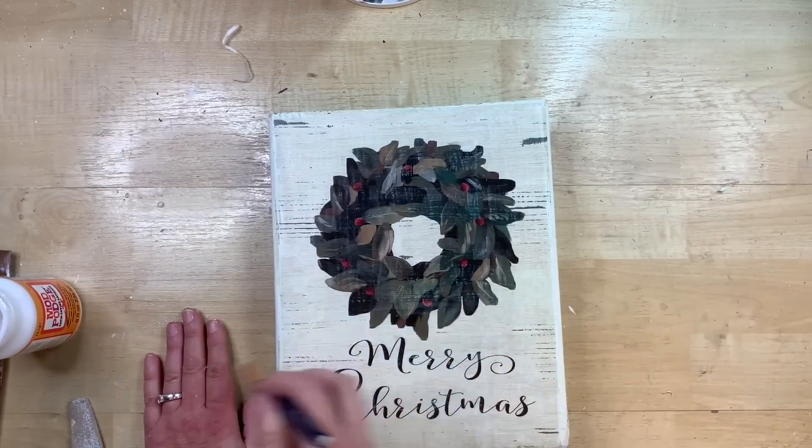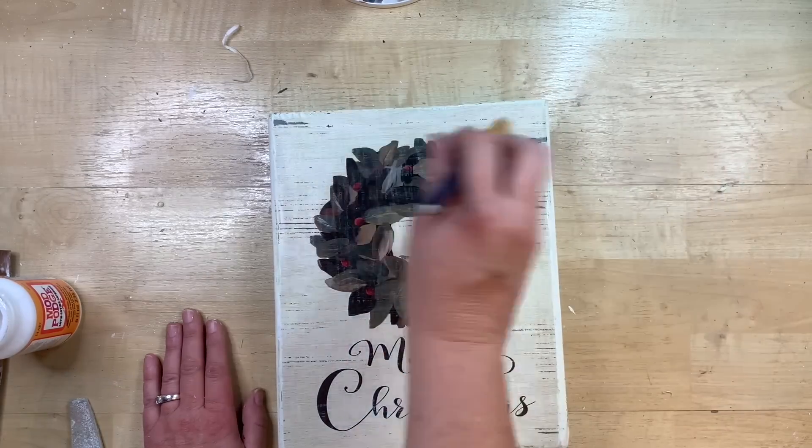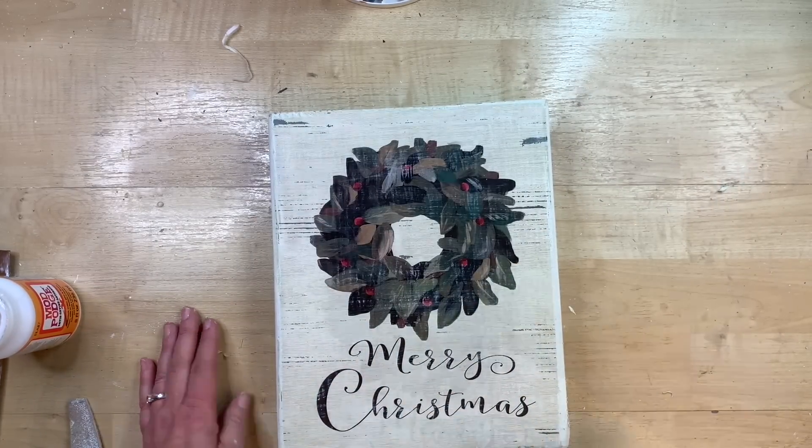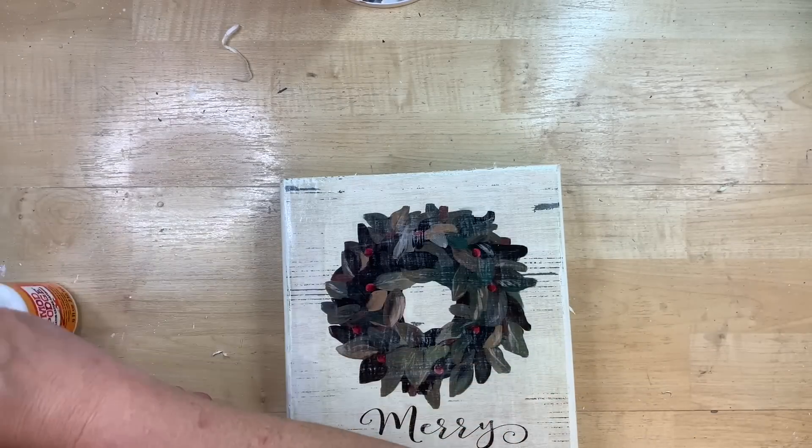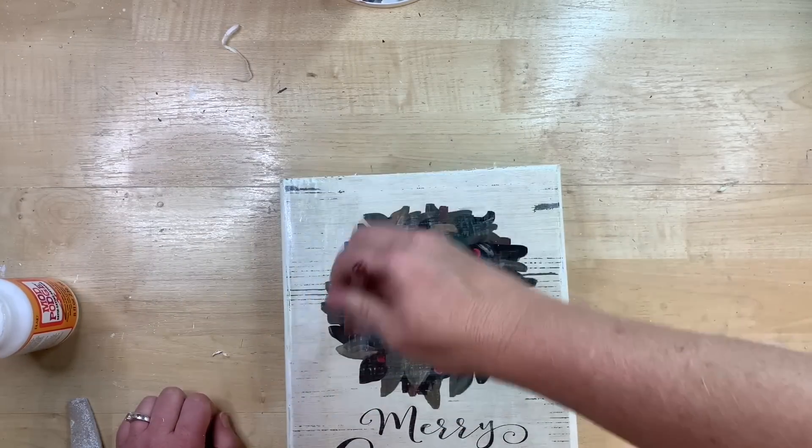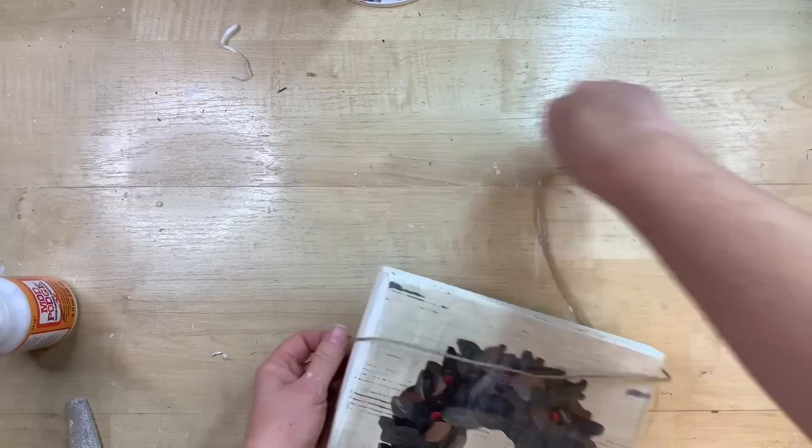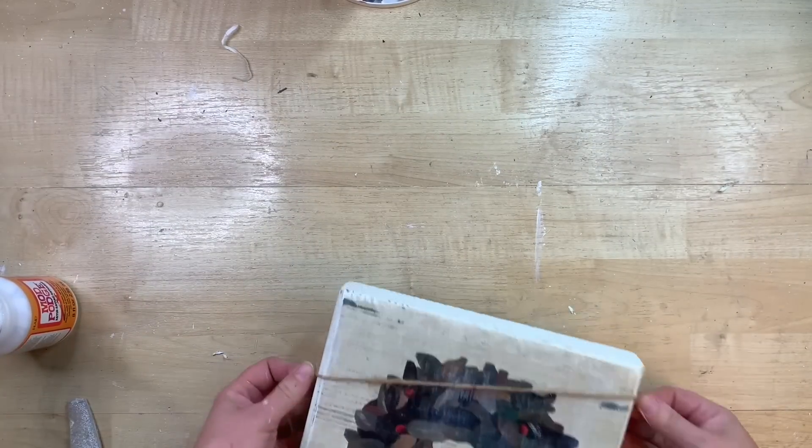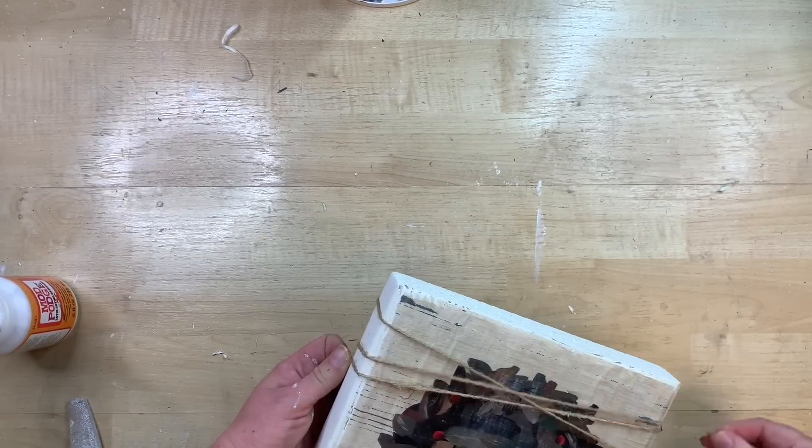But you can see that while that Mod Podge was still wet, I was able to peel back carefully the pages. If you feel at all like those pages are going to tear, stop and don't do that. Just embrace the wrinkles if they're there. I've heard people use like cling wrap or something like that to kind of rub on. Now I'm just taking a little bit of white paint and dry brushing over it to make it look like it was kind of a part of that wood.